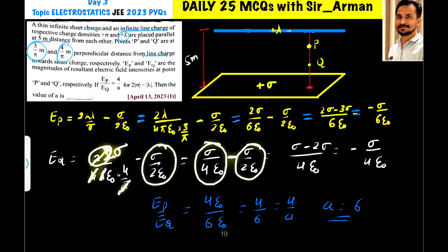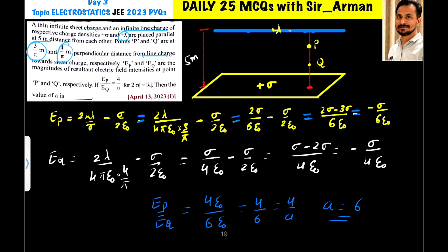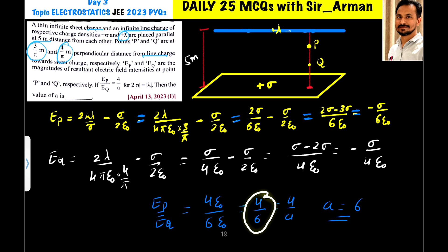So EQ equals sigma by 4 epsilon naught minus sigma by 2 epsilon naught. Taking LCM as 4 epsilon naught gives sigma minus 2 sigma over 4 epsilon naught, which equals minus sigma by 4 epsilon naught. In magnitude, EQ equals sigma by 4 epsilon naught. Taking the ratio EP by EQ: sigma and sigma cancel, epsilon naught and epsilon naught cancel, and 4 comes up, giving 4 by 6. Comparing with 4 by A, we get A equals 6.